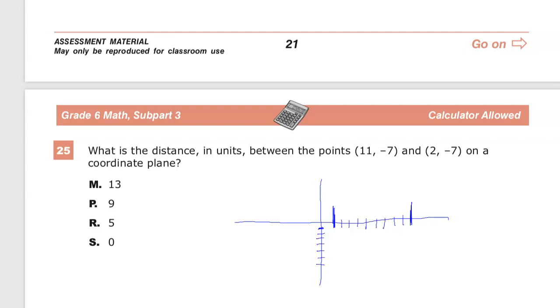This is the grade 6 math practice test for T and Ready, currently on question number 25. What is the distance in units between the points (11, -7) and (2, -7) on a coordinate plane?